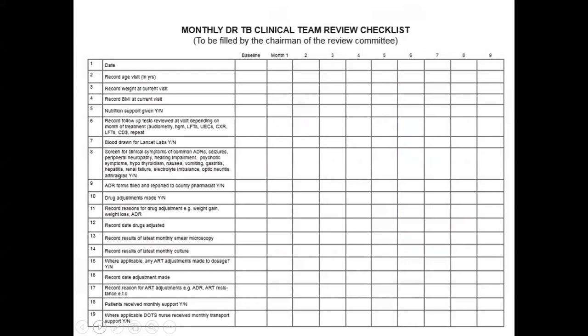For documentation, remember: for quality of care, if it's not written, it's not done. In the DRTB logbook, there is a checklist showing that the clinical team meets and discusses each patient each month. It's at the end of the logbook. We need to ensure this is filled at each monthly review by the committee. Where a meeting was missed, you leave out the column and can explain why the meeting was not held.